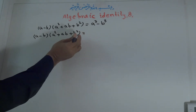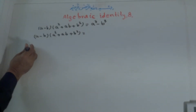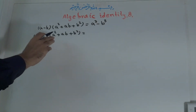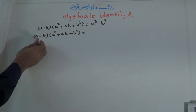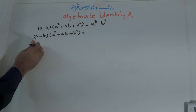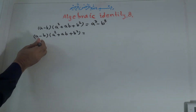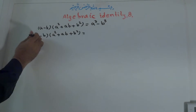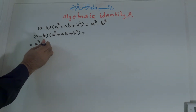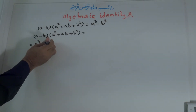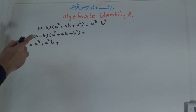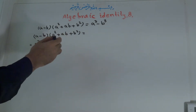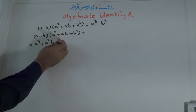This is equal to: we multiply the first term with all of them, then the second. A times A² is A³. Positive times positive is positive. A times AB is A²B. Positive times positive is positive. A times B² is AB².